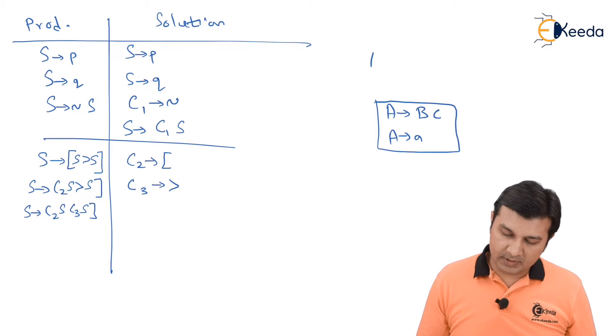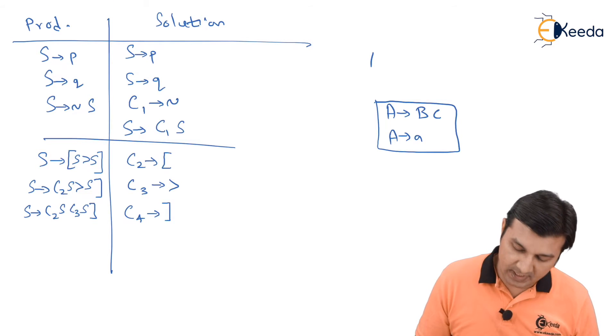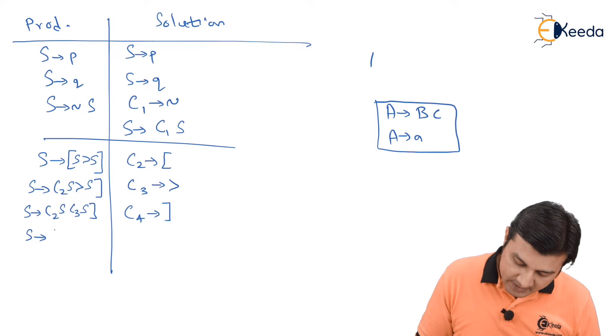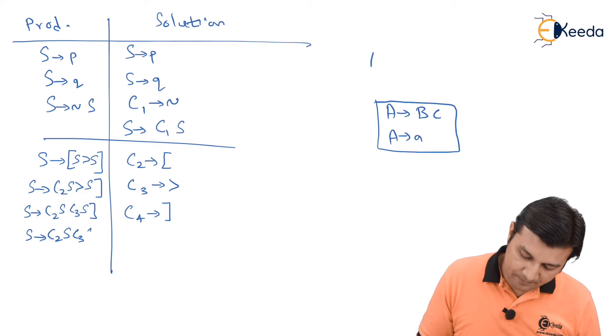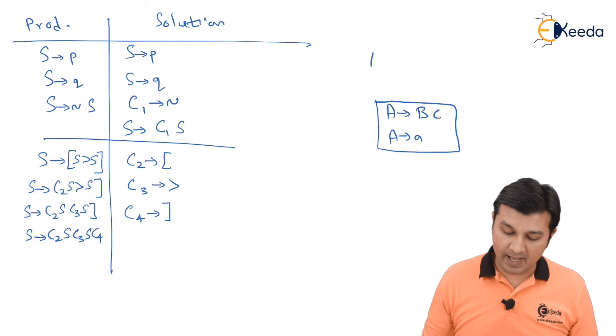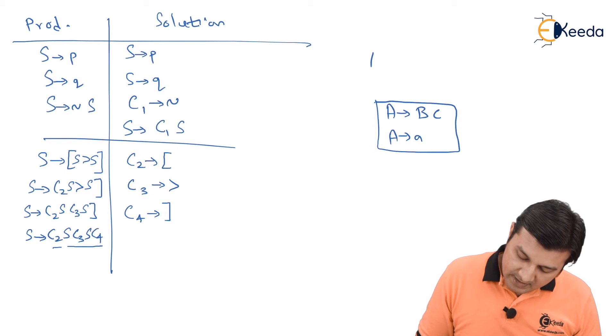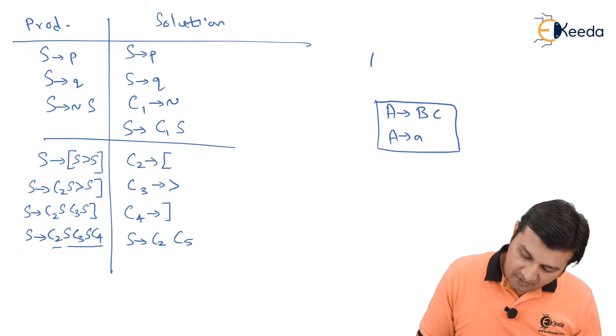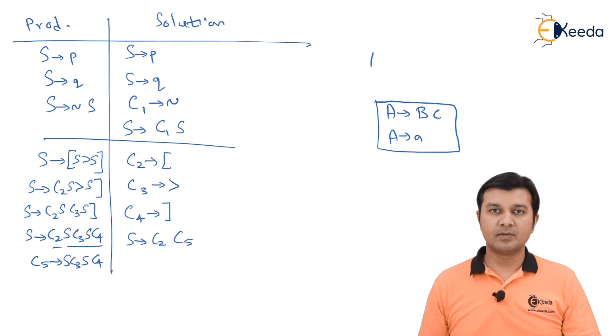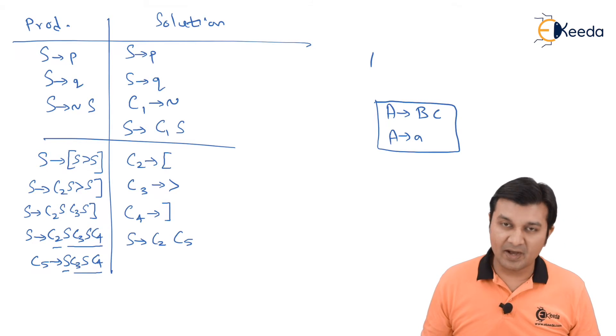Again, I observe that the grammar still has a terminal and that is nothing but a closing square bracket. So let us introduce one more temporary variable C4 which is deriving me this closing square bracket. And therefore, now I have my S as C2 S C3 S C4. Now, I see the grammar consists of a variable giving me a lot of other variables. And the rule for getting converted to CNF was suggested as keep the first term as it is and replace everything by another temporary variable.